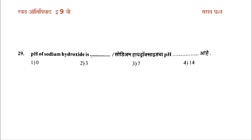The pH of sodium hydroxide is greater than 7. The pH of sodium hydroxide options are 0, 3, 7, or greater than 7.